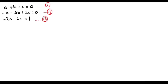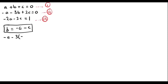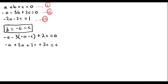Here are our three equations. To solve them, let's take equation 1 and make B the subject: B = -A - C. Now substitute into equation 2: -A - 3(-A - C) + 2C = 0, which gives -A + 3A + 3C + 2C = 0, so 2A + 5C = 0. This becomes equation 4.